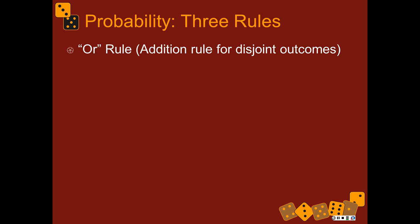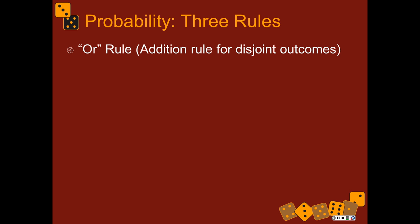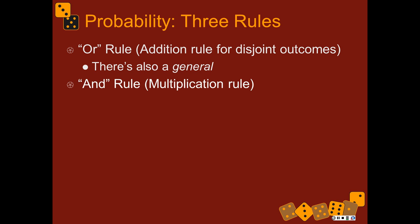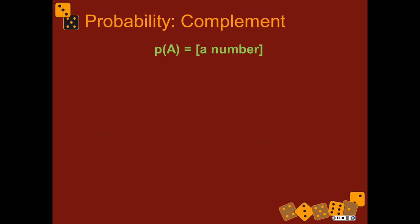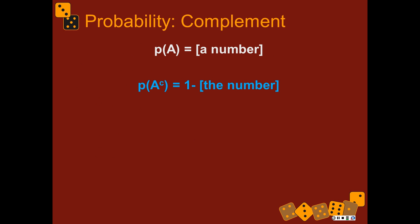So three rules of probability: the OR rule, which is the addition rule for disjoint outcomes; the AND rule, which is the multiplication rule; and the NOT rule, which is the complement rule. The complement of a number — the probability of something happening is a certain number, and the complement is one minus that certain number.